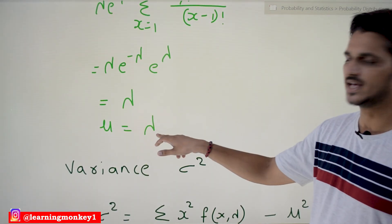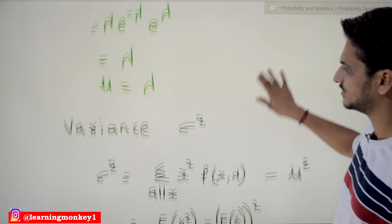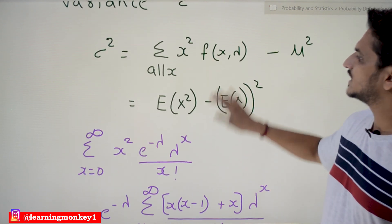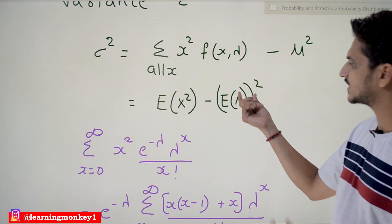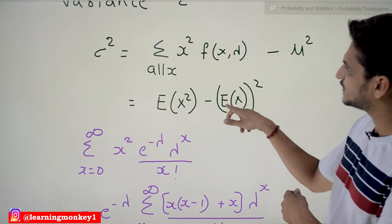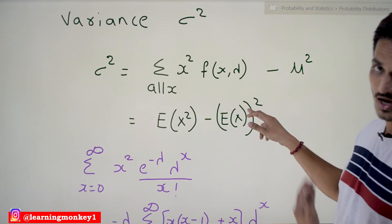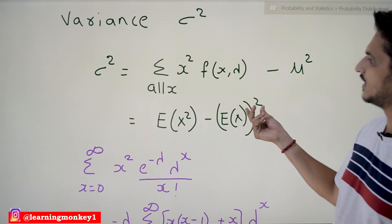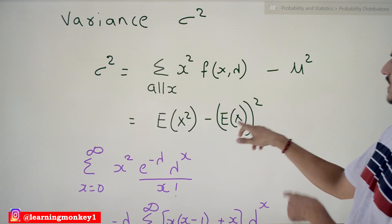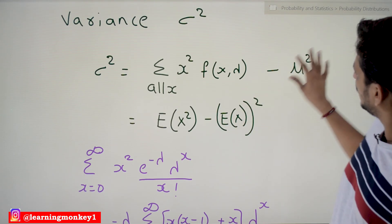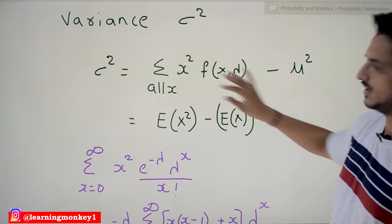So the mean of Poisson's distribution is λ. Now we identify the variance. For discrete random variables, variance σ² = E[X²] − (E[X])². We already found E[X] = λ, so (E[X])² = λ², which we write as μ². Now E[X²] = Σ x² · f(x) minus μ², and we need to identify the Σ x² · f(x) term.